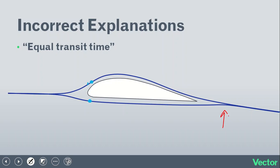they're forced to meet up at the same point at the trailing edge of the airfoil. So because they're forced to meet up at the same point, and since there's a greater distance to travel over the upper surface, therefore the air that moves over the upper surface has to move faster in order to meet up with the air moving over the lower surface. This is completely wrong for what I hope are some obvious reasons.